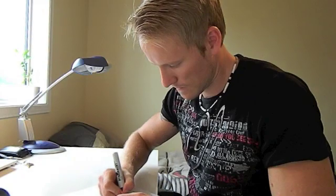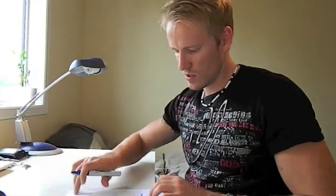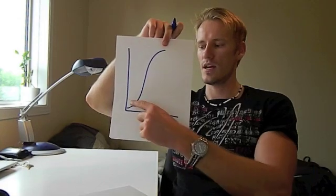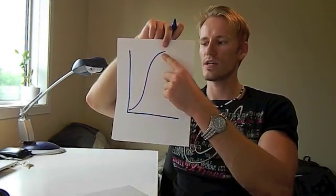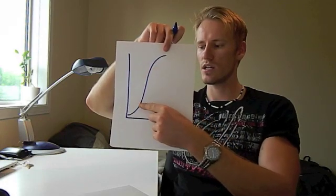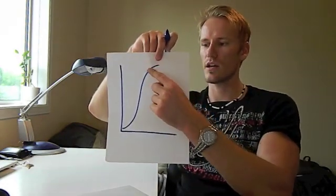When we graph the production function, it shows the relationship between output and the quantity of workers. This is important because it usually shows us when the marginal product begins to decline — known as diminishing marginal product. Mathematically, we describe this function as increasing at a decreasing rate. It looks like an S-curve: it's increasing, but at a decreasing rate. Somewhere in the middle is where the slope is the steepest, and after that it's declining.